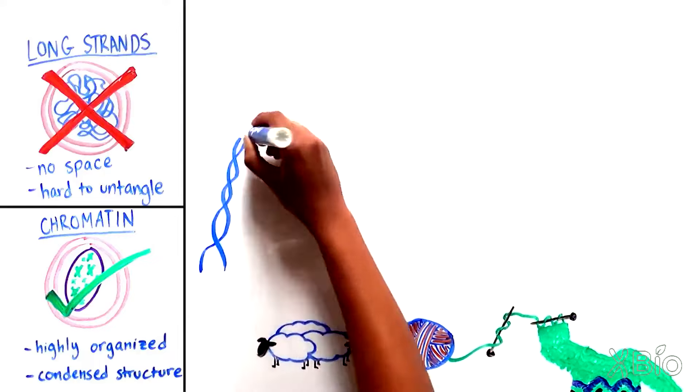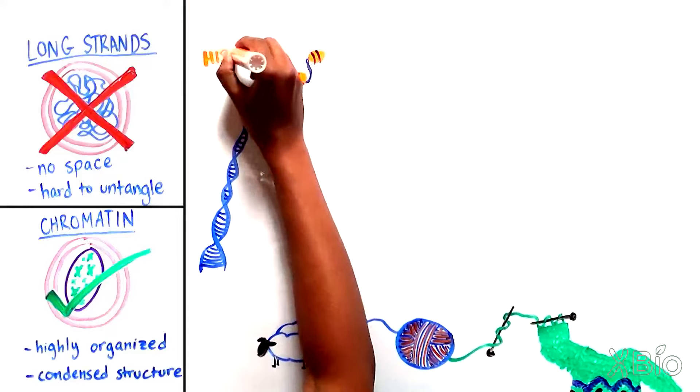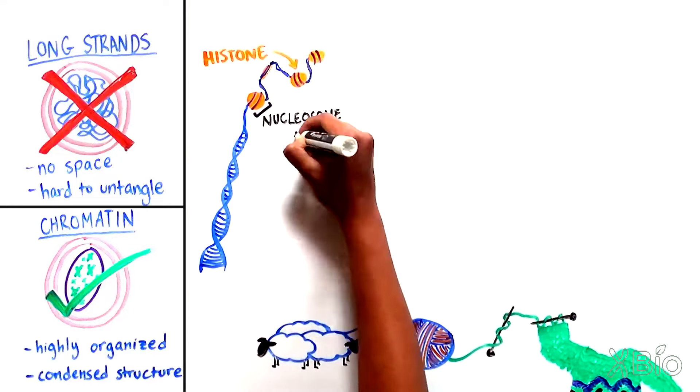First, a small segment of the DNA double helix is wrapped around a collection of proteins called histones, which forms a structure called a nucleosome.